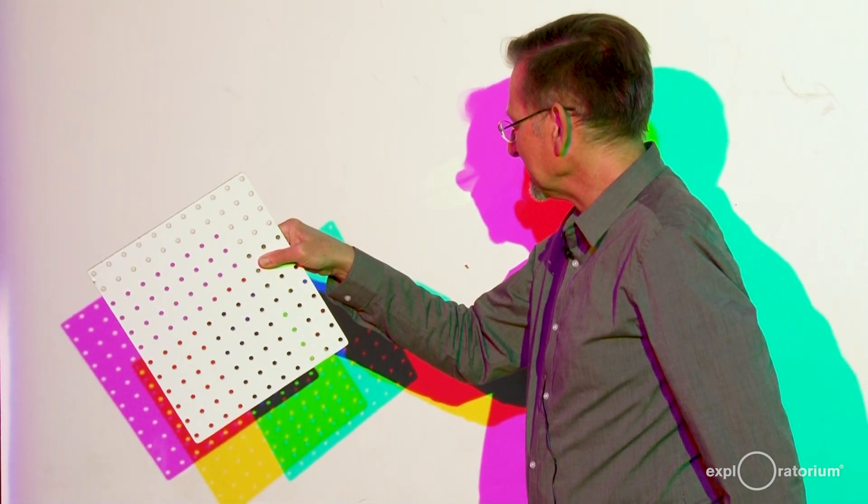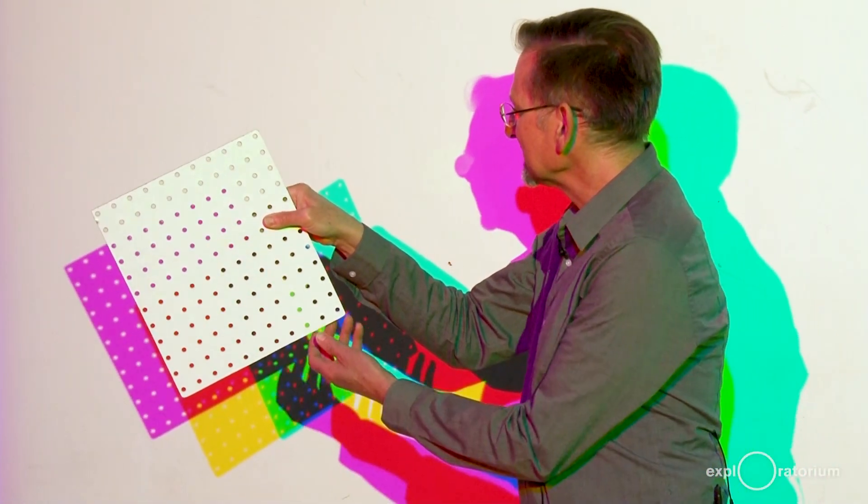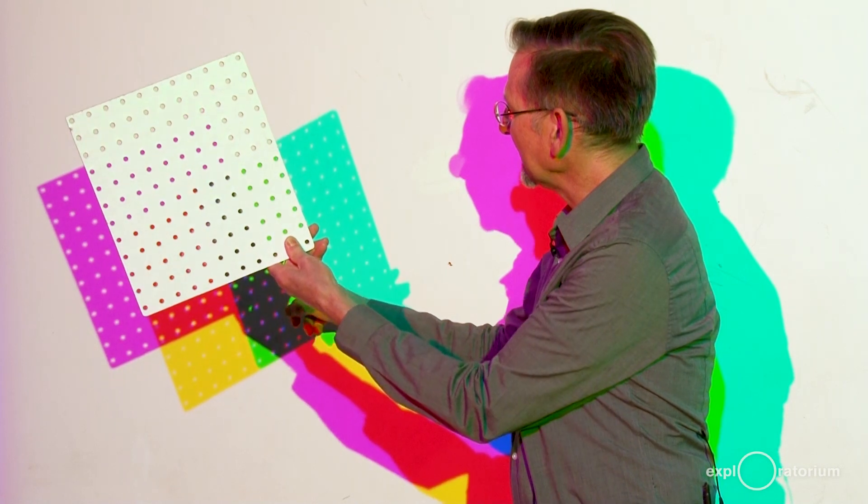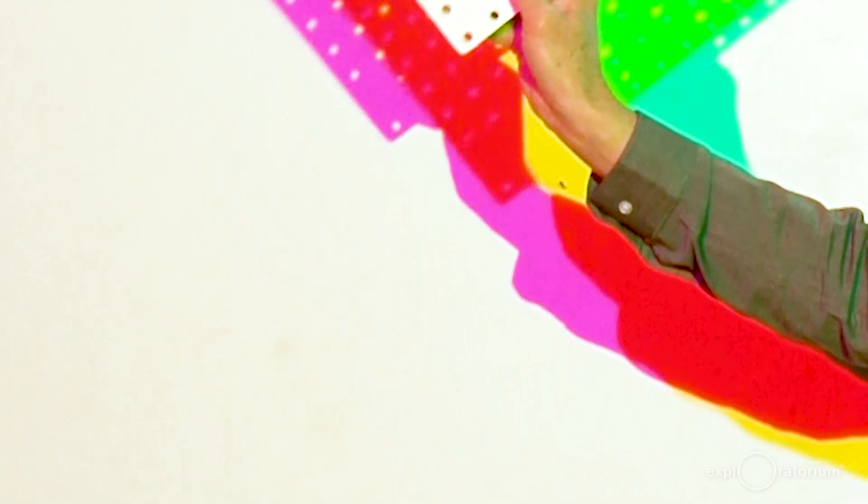This board with holes in it makes shadows but also lets light go through, and you can see the colored light bulbs shining through the holes.